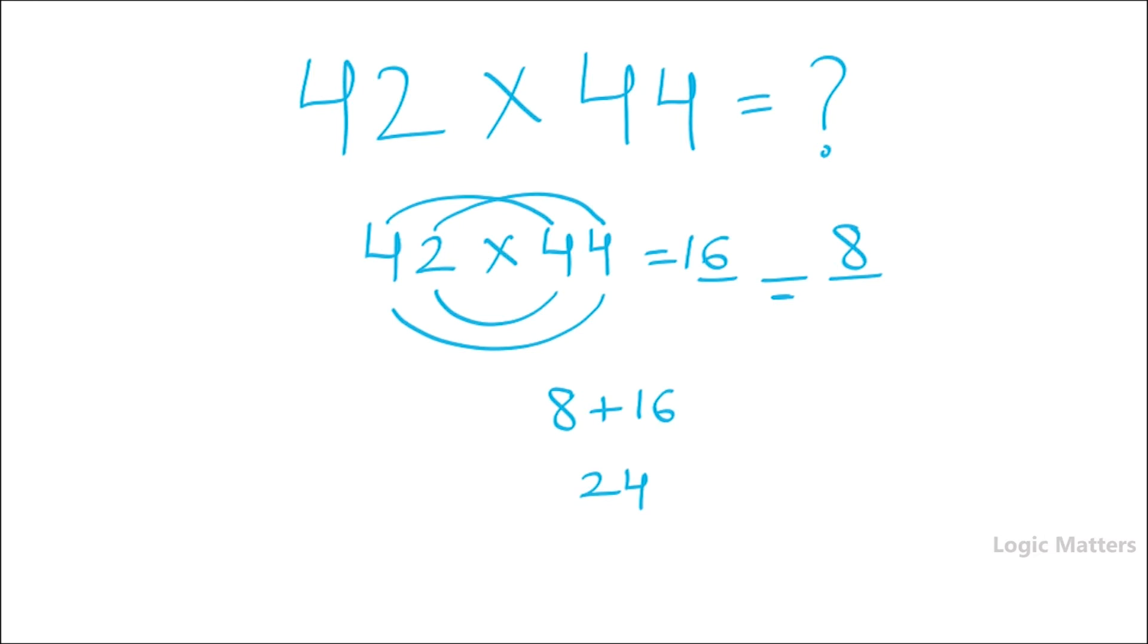So we can't accommodate this 24 here. We can only place 4 and carry forward 2 to the before number. So total this: 8, 4, 6 plus 2 is 8 and 1. So the answer is 1848.